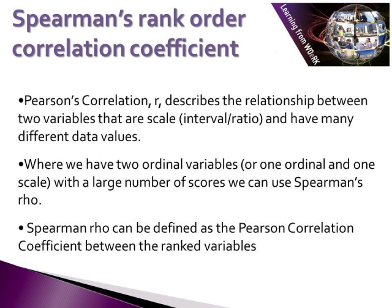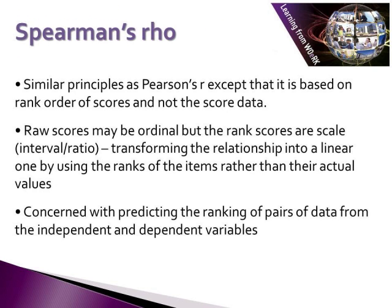Spearman's rank order. Pearson's correlation describes the relationship between two variables that are scale and have many different data values. When we have two ordinal variables, or one ordinal and one scale, with a large number of scores, we use Spearman's rank order. Spearman's rank order can be defined as Pearson's correlation but between ranked variables — it has exactly the same principles as Pearson's, except it is based on rank order scores and not the score data itself. Raw scores may be ordinal, but rank scores are scale, and we transform the relationship into a linear one by using the ranks of the items rather than actual values.